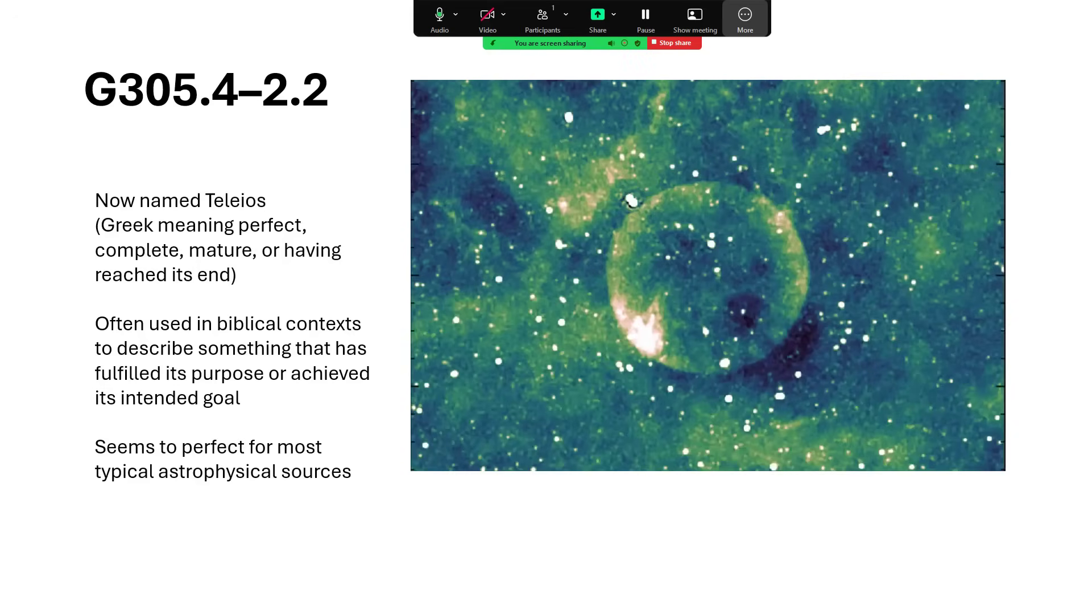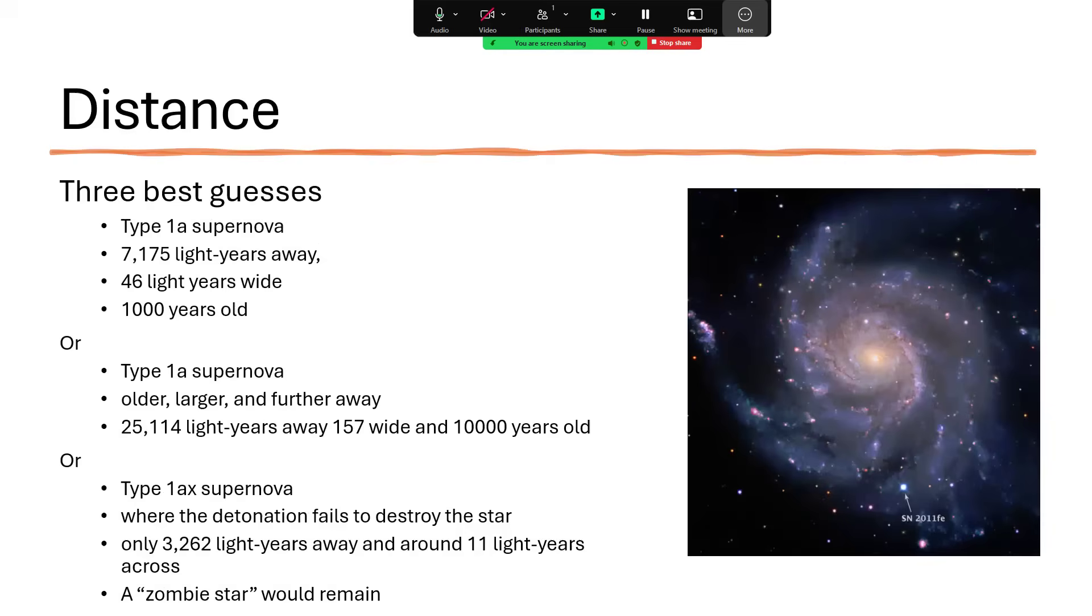So this object, Teleios, also known as G305.4-2.2—I'm going to stick to Teleios—it's from the Greek and it means perfect, complete, mature, or having reached its end or its final state. And in this case it's referring to the perfect circularity or perfect sphere of this weird construct out there in nature. Now we get a lot of circular things in astronomy, but they're not usually quite this perfectly round. They're usually a bit more asymmetrical—they might be exploding stars or dying stars or planets or stars themselves or rings of material in colliding galaxies. We get rings all the time, but they're always a bit unsymmetrical. This one is not. It's perfect—Teleios.